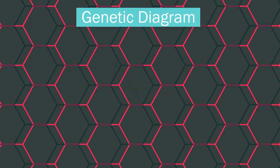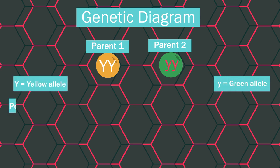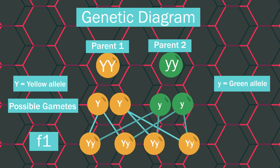Genetic diagrams are great for showing how this works. We have two parents: the yellow pod parent with the two dominant yellow genes—notice how their dominant traits are given a capital letter—and the green pod parent with the two recessive green genes, which are shown by a smaller letter. These are their possible gametes, and these are the possible genotypes of the offspring. Because the yellow gene is dominant, all of the offspring will have the yellow pod phenotype but do carry the green recessive gene.